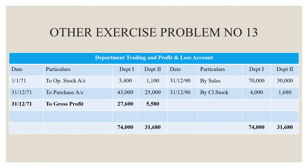Purchases are $43,000 and $25,000. On the credit side, sales are $70,000 and $30,000, and closing stock is $4,000 and $1,680. The gross profit balance on the debit side is $27,600 for Department 1 and $5,580 for Department 2. Grand total on both sides is $74,000 for Department 1 and $31,680 for Department 2.